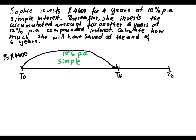Sophie realized that a compounded interest plan is better than a simple one. So on the last 2 years, Sophie changes the plan to 12% per annum because she wants better returns. We take note that it is compounded interest, not simple interest.